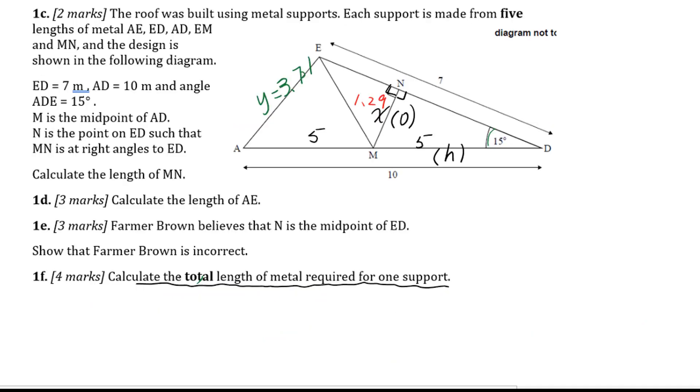Let's go to 1F. Calculate the total length of metal required for one support. Each support is made from 5 lengths of metal. AE we already figured out. ED we already know that's 7. AD that is 10. EM we didn't figure this out. MN we already figured out that's 1.29. So we need to figure out EM. For the EM, we already figured out ND equals 4.8307. So we know EN. Then we can use Pythagorean theorem to figure out this EM.